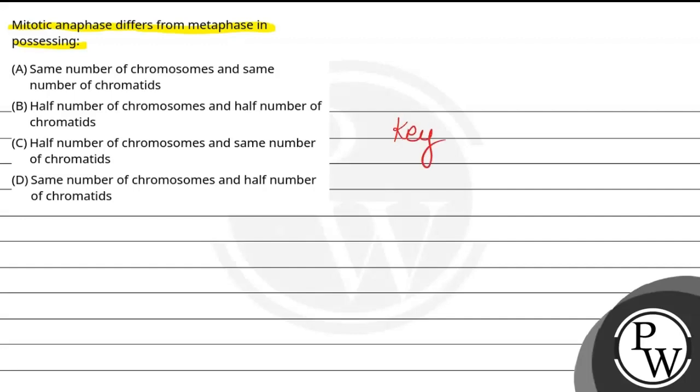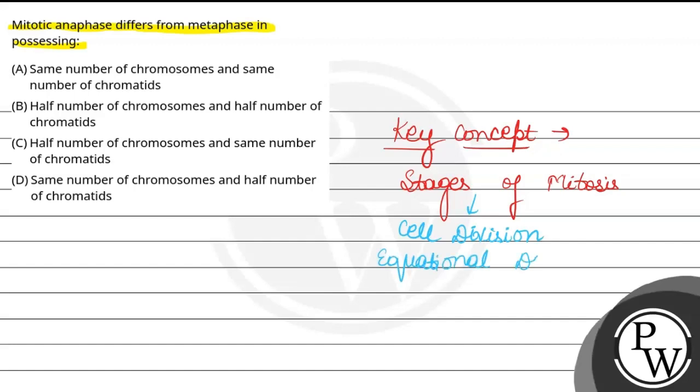The key concept is stages of mitosis. Mitosis is a type of cell division which takes place in somatic cells. This is called equational division because the chromosome number in the parent and offspring cells remains the same. Here, two daughter cells are formed. There are four stages.